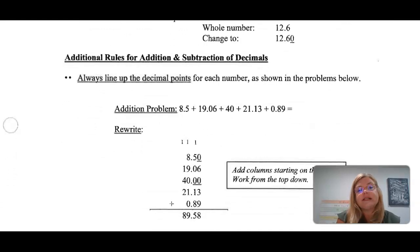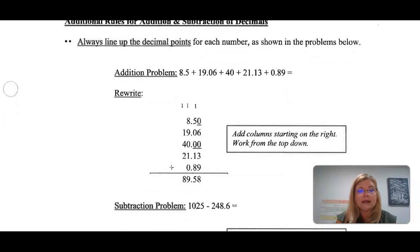Additional rules for addition and subtraction. You always line up the decimal points. When you're talking about addition and subtraction of decimals, you always line up the decimal points for each number. There's a problem below that shows you how you would want to line that up.